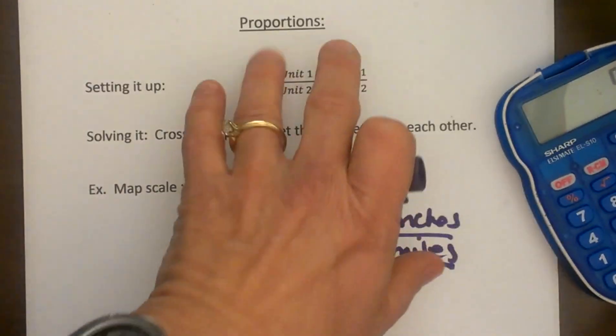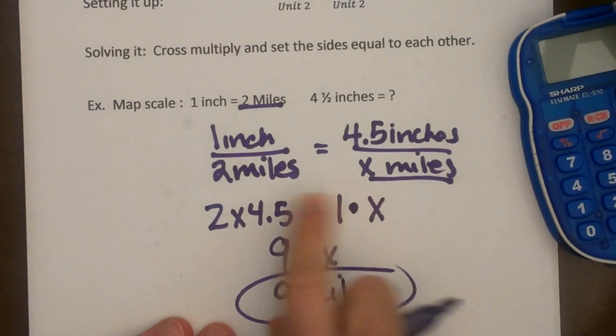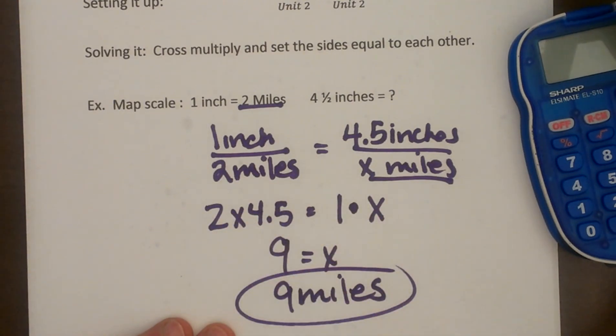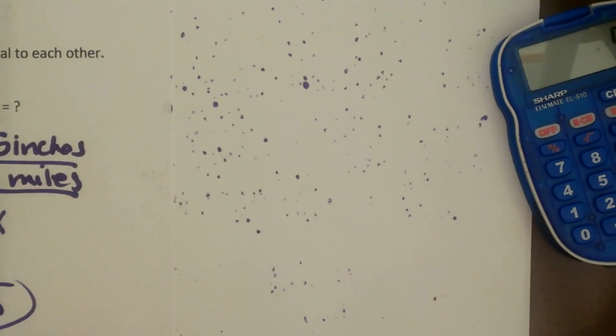So you set up your units matching top to bottom and then you cross multiply and when you cross multiply you set them equal to each other and just solve. So now let's look at a couple of quick word problems.